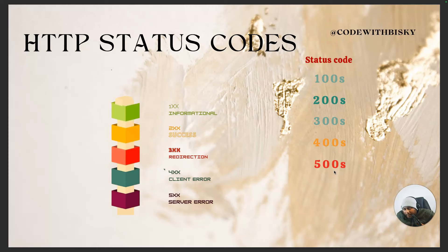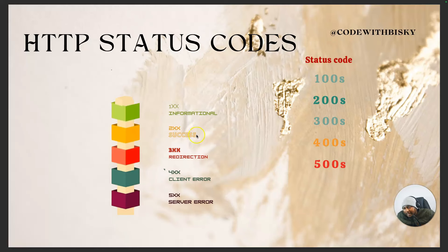When sending requests to your backend, you can get an error or not. There are also status codes. The 100s are informational. The 200s mean success — when you get a status code from 200 to 299, it's a success. The 300s mean redirection — you may be redirected to another server. The 400 to 499 range is client error. The 500 to 599 range is a server error.